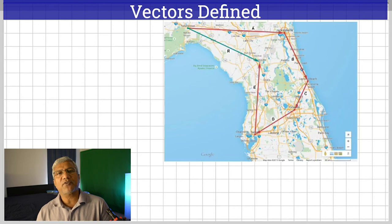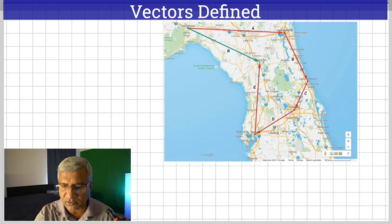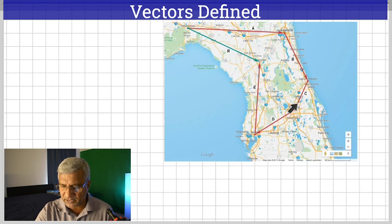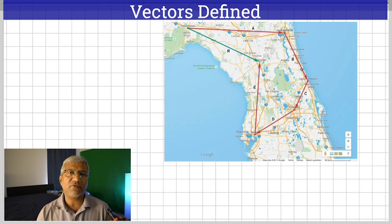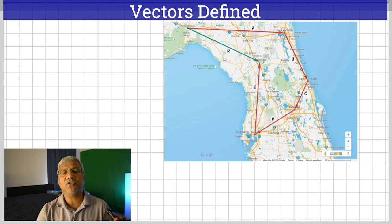This not only works for two vectors — it works for any number of vectors. If you take one vector and fit it on to the tip of the next one, it works for any number. So here is vector A, B is fitted on to the tip of A, same thing with C and D. They are all in one flowing direction. If they're all in one flowing direction, to find the resultant all you have to do is join the starting point to the finishing point.